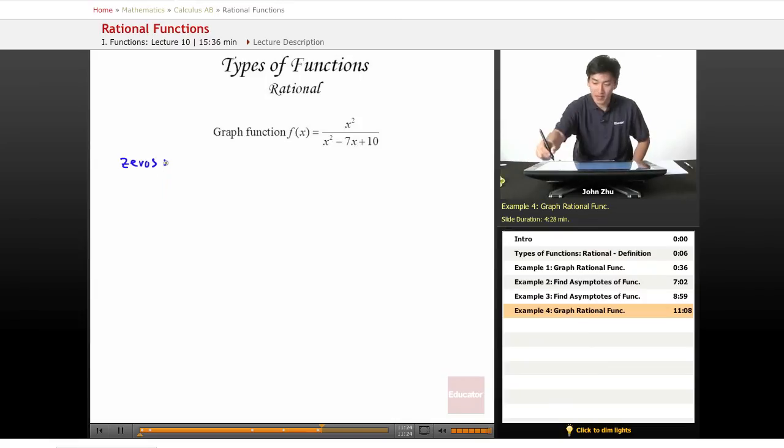Well, we should probably simplify this first. So let's do x squared remains over, and just factor this thing out. So x plus 2, x minus 5. Actually, it would be x minus 2, and x minus 5.